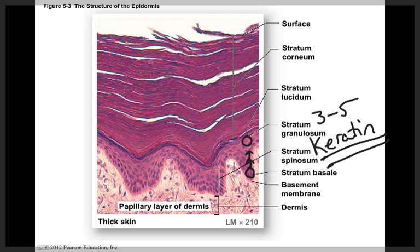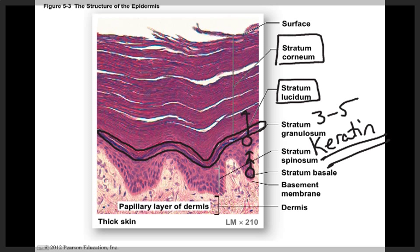The stratum lucidum is an extra layer of cells found only in thick skin areas, meaning only in the palms of the hands and soles of the feet. From the stratum granulosum, cells move up into the stratum corneum, the most superficial layer, where cells die and flatten out. There are about 15 to 30 layers of keratinized cells. Keratinization forms these protective superficial layers. It takes about 15 to 30 days for a cell to move from the stratum germinativum all the way up to the stratum corneum, where dead cells remain for about two weeks before being shed.